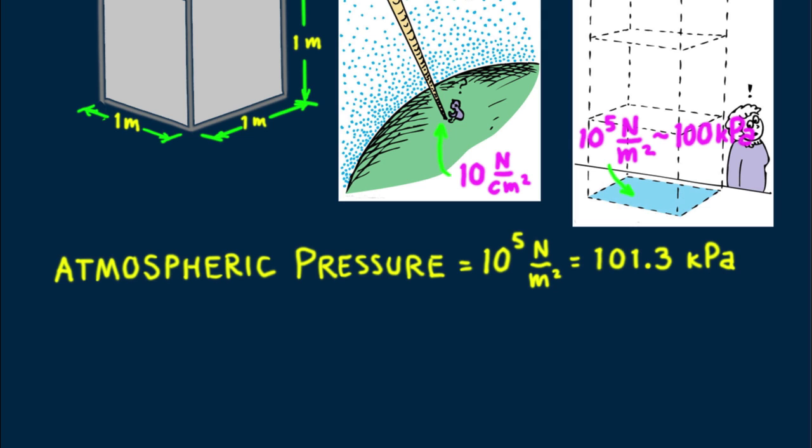We don't feel atmospheric pressure because pressures within our bodies balance it, just as fish deep in the ocean push outward against the huge pressures of seawater. If we remove or reduce these internal pressures, the results can be dramatic.